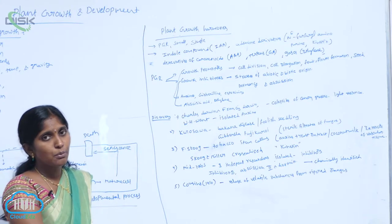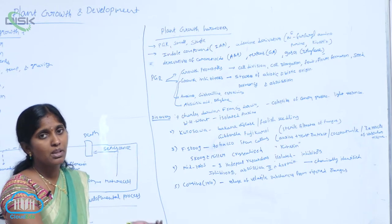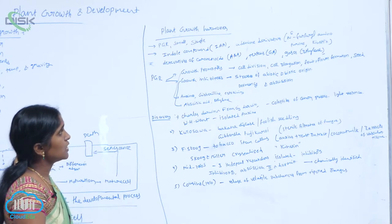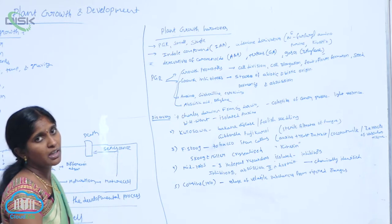Basically for auxin production, the tryptophan amino acid is most important. By using indole compound, IAA is prepared.